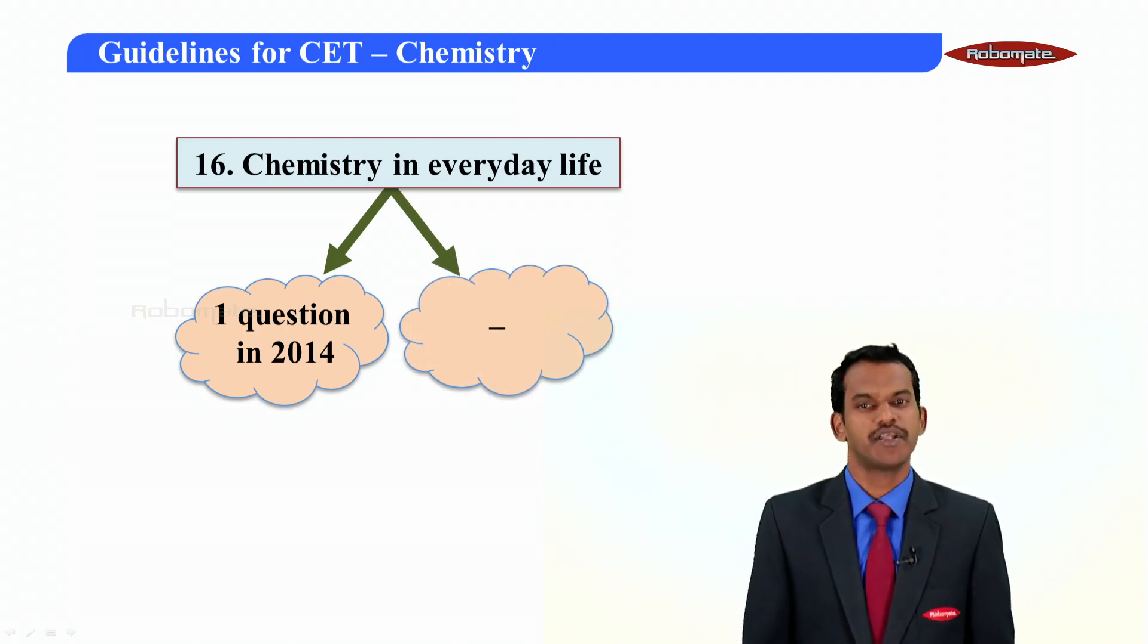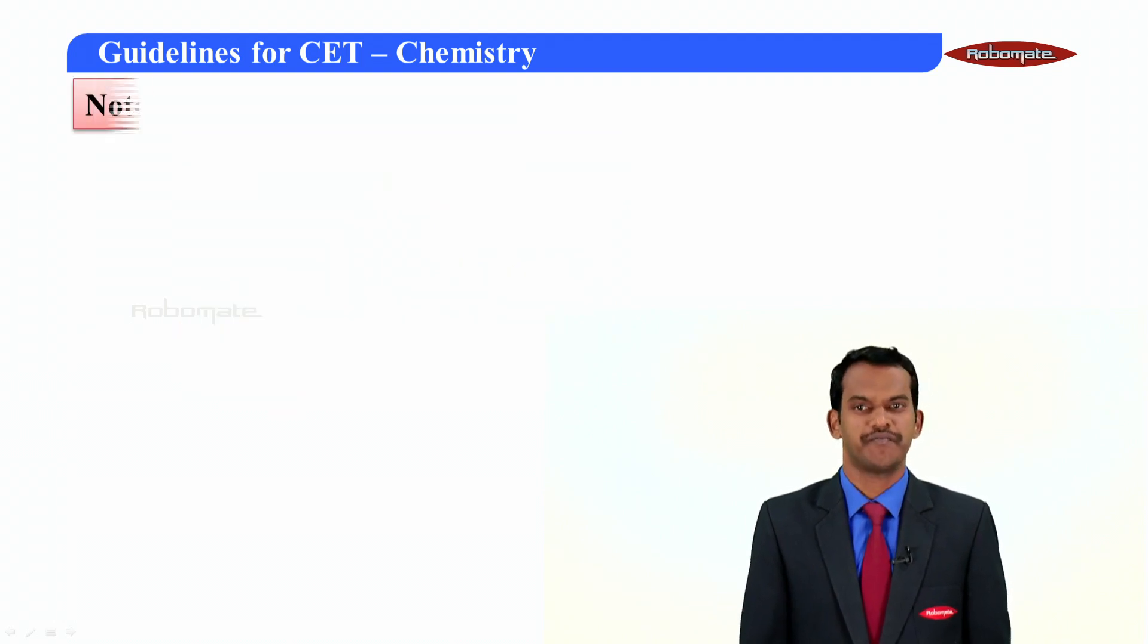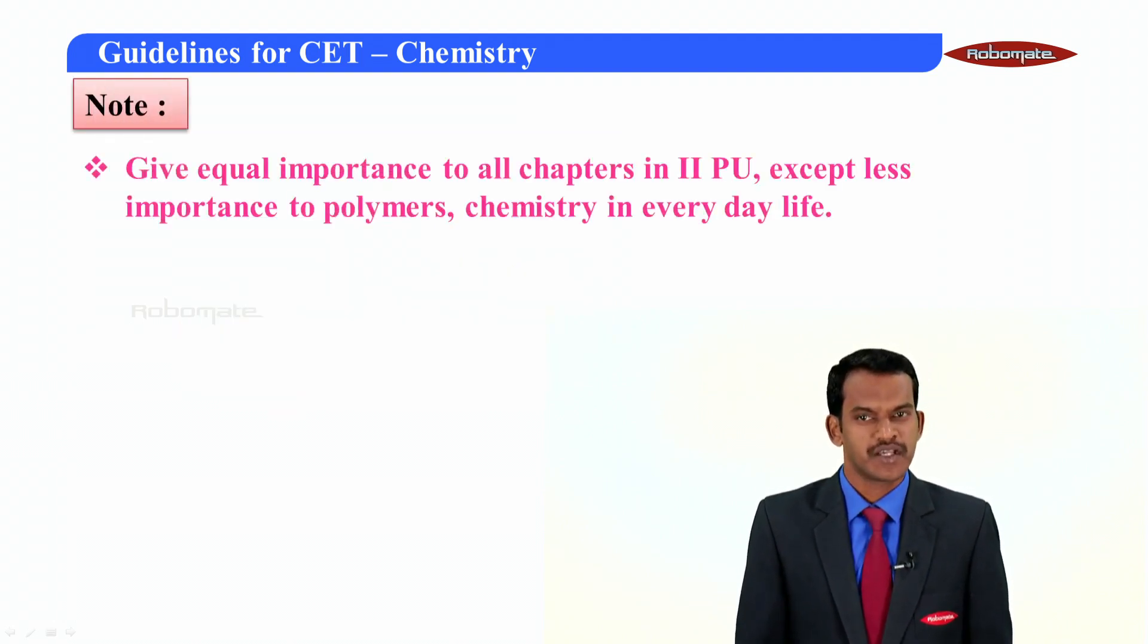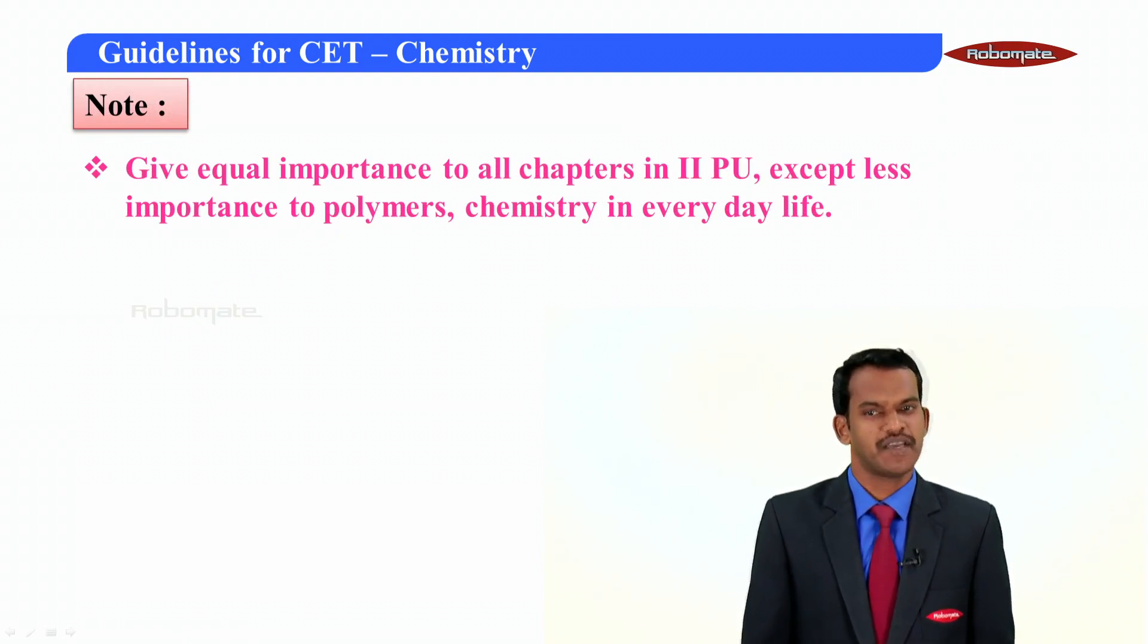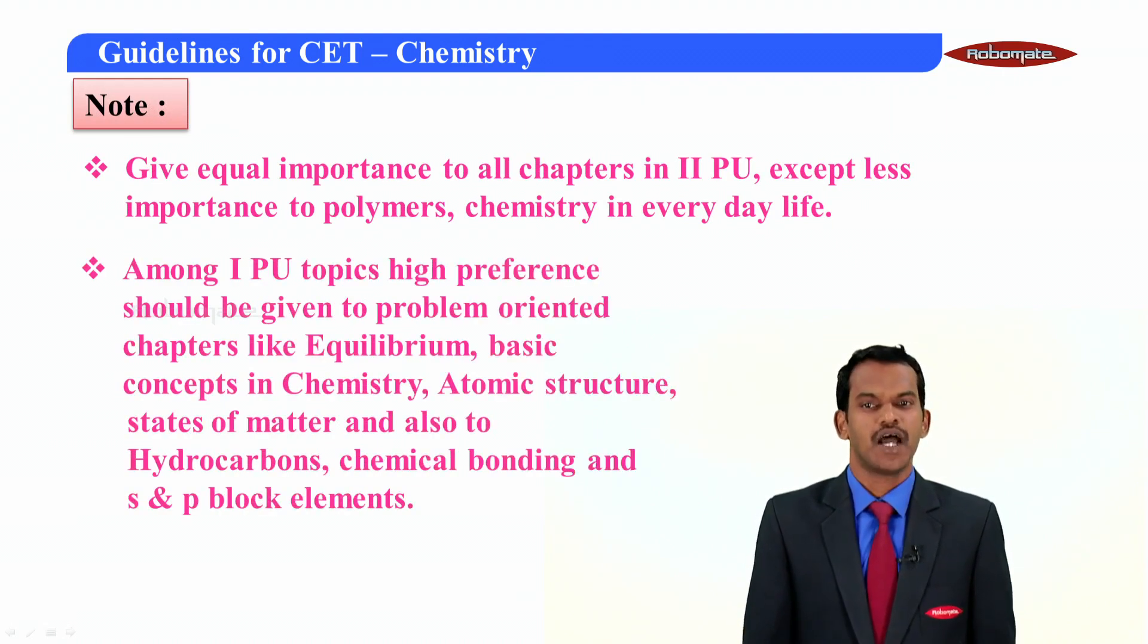This is a brief idea about the number of questions asked in KCET in the year 2015 and 2014. Now students, please note: give equal importance to all the chapters in second PUC except giving less importance to the topics like polymers and chemistry in daily life. Among the first PUC topics, high preference should be given to the problem-oriented chapters such as equilibrium, basic concepts of chemistry, atomic structure, states of matter, and also the organic topics like hydrocarbons and chemical bonding and S and P block elements.